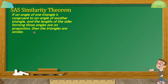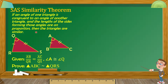To better understand that, let's look at our figures. We have triangle ABC and triangle QRS. Based on the SAS Similarity Theorem, when an angle of one triangle is congruent to an angle of another triangle, and the sides — side QR, side QS, side AB, and side AC — are proportional.